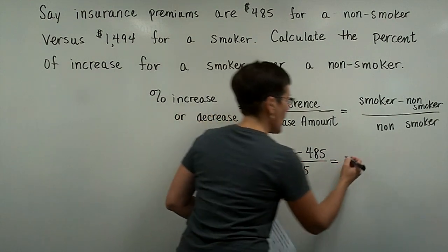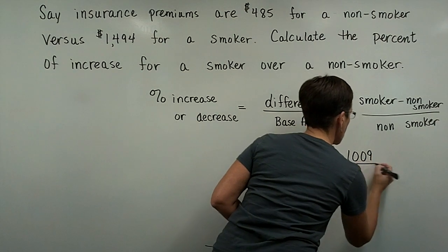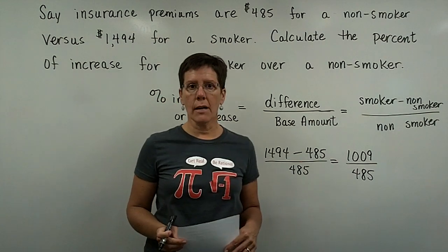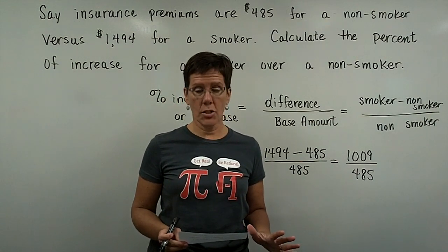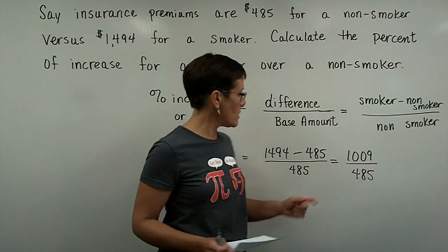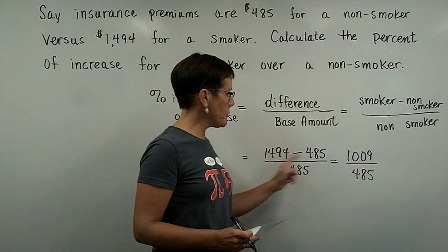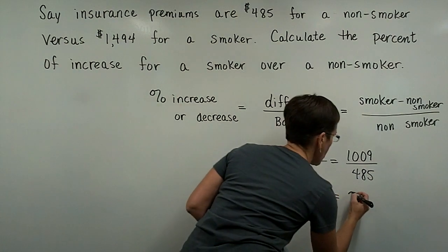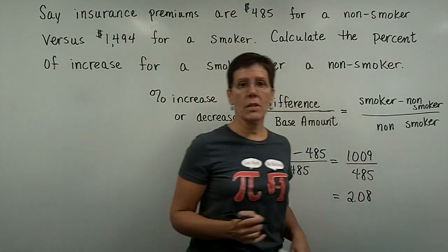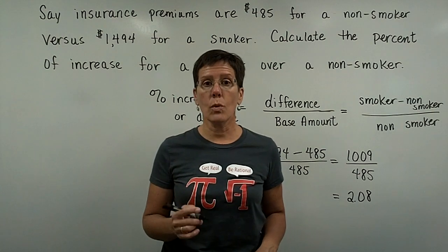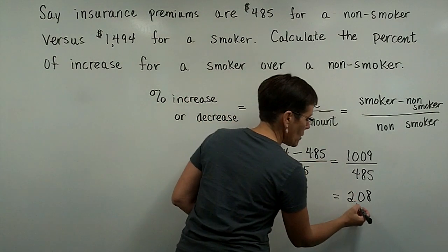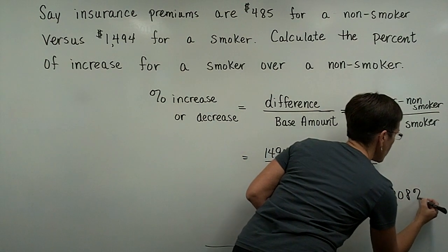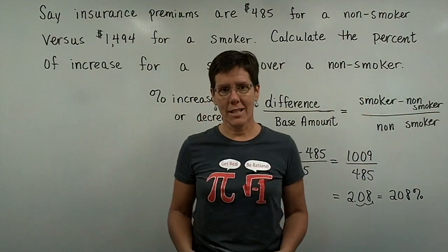That difference is $1,009. If you get your calculator out and take $1,009 and divide that by $485, this is a circumstance where the percentage is going to turn out to be greater than 100%. That increase is significant — quite a large difference. The decimal value that comes out of this is 2.08. And if you want to write that as a percentage, you move the decimal place two places to the right in order to put that percent symbol on this value. So the increase for a smoker is 208% over a non-smoker.